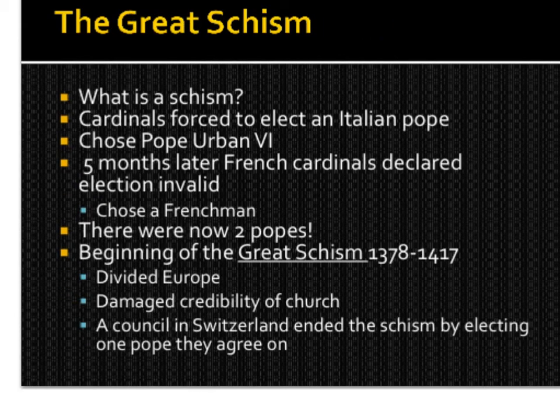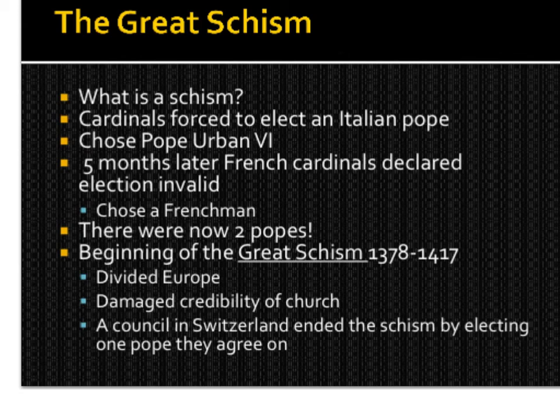This next section is very important — the Great Schism. A schism is a division between two opposed parties. Pope Gregory XI dies, and an Italian Pope named Pope Urban VI is elected. The French do not like him and want a French Pope, so they elect their own Pope with his seat at Avignon. Now there are two Popes. This is the beginning of the Great Schism, lasting from 1378 to 1417 — about 60 years. It divided Europe and damaged the credibility of the church, until finally a council in Switzerland ended the schism by electing one Pope that all could agree on.